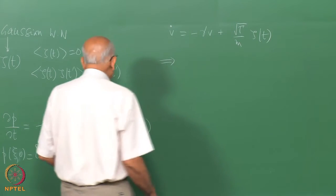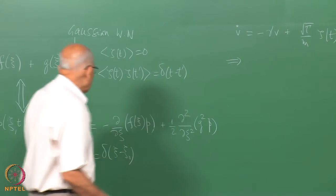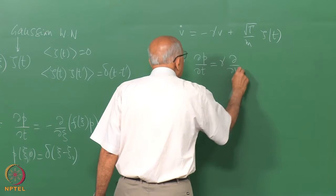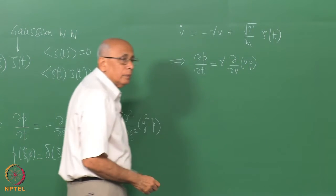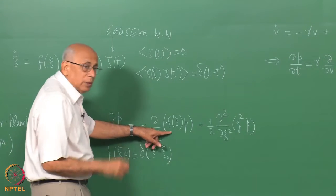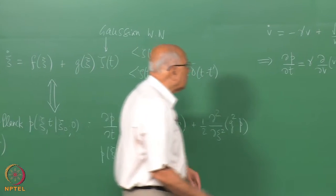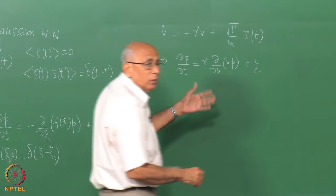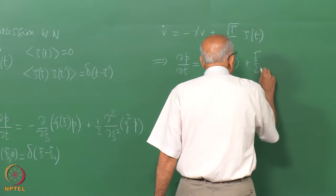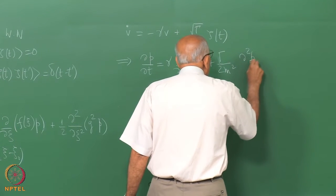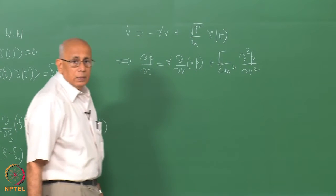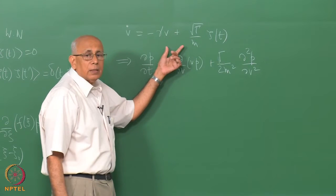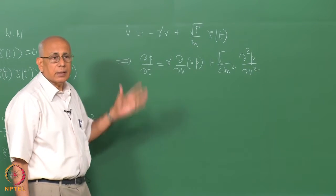Applying the general Fokker-Planck correspondence, this implies delta p over delta t equals gamma times delta over delta v of v times p — the minus sign from minus F of psi cancels — plus one-half times g-squared, which is gamma over m, times d²p over dv². Without proof, using this general correspondence, given this Langevin equation, this is the equation satisfied by the conditional density of the velocity.